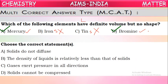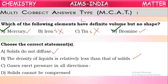Question 2: Choose the correct statements. Statement 1 — Solids do not diffuse: correct, solids cannot intermix easily. Statement 2 — The density of liquids is relatively less than that of solids: correct, solids have maximum density. Statement 3 — Gases exert pressure in all directions: correct. Statement 4 — Solids cannot be compressed: correct, because particles are already tightly packed. All statements are correct.